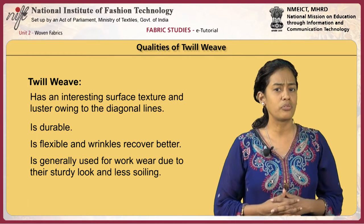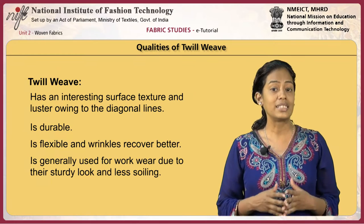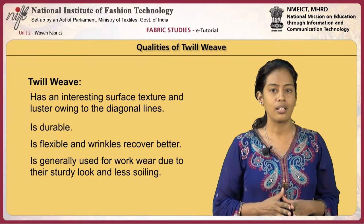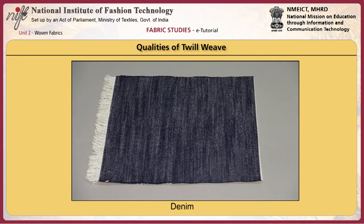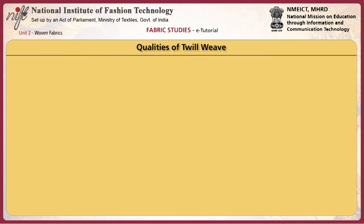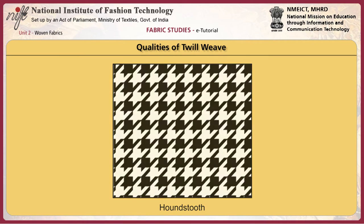Twill woven fabrics are generally used for work wear due to their sturdy look and resistance to soiling. Denim is an example of twill woven fabric. Houndstooth is another example of twill woven fabric.